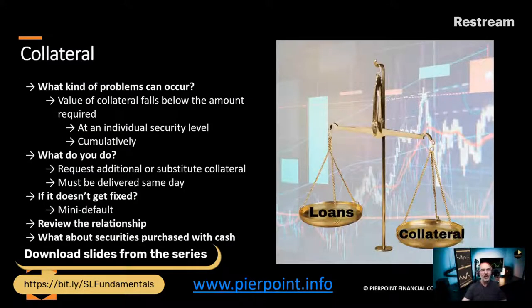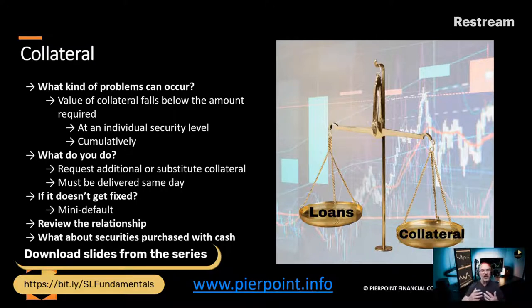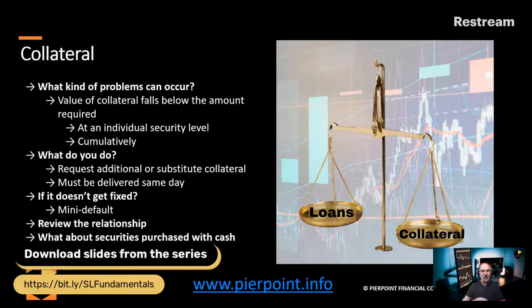If we first focus on collateral, the obvious place to start is what kind of problems can occur. Collateral is held as a risk mitigant in the event of counterparty default. The only way it can be an effective risk mitigant is if we always have sufficient collateral. The key function here is that you always want to make certain, if you are a lender, that your collateral exceeds the value of the securities you have on loan.